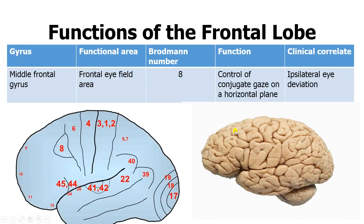In the middle of the middle frontal gyrus, you have the frontal eye field area, or Brodmann area 8. This allows you to control conjugate gaze on a horizontal plane, and if you damage it, what you get is ipsilateral eye deviation — meaning the eye will deviate to the side of the lesion.